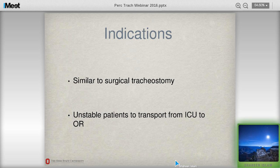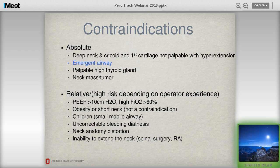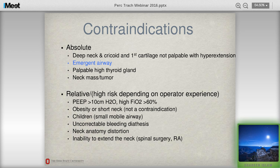The indications for percutaneous tracheostomy are similar to surgical tracheostomy. Sometimes unstable patients who cannot be transported to the ICU or OR can have their tracheostomy done using this technique. Contraindications are mostly controversial to some extent. There are absolute contraindications, like deep neck, or when you cannot palpate the cartilage — the cricoid, first tracheal ring, or the sternal notch — even with hyperextension of the neck. If you have a palpable thyroid gland, neck mass, or tumor, it's probably better to have a surgical tracheostomy so organs can be identified and the airway established.